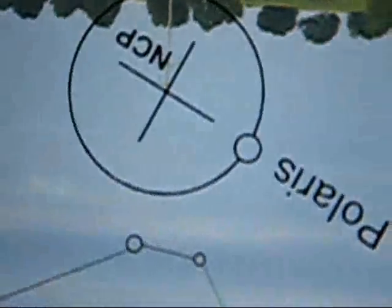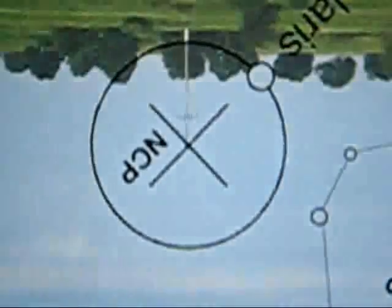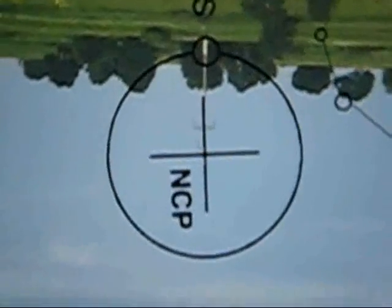And, however you may turn your mount's right ascension axis, that cross must stay on the top of the distant object.